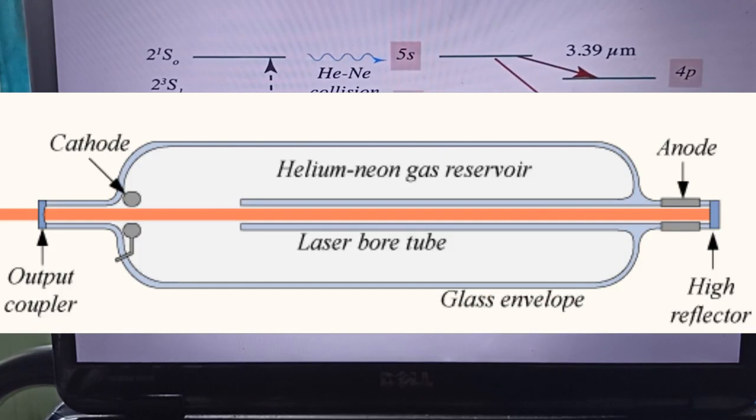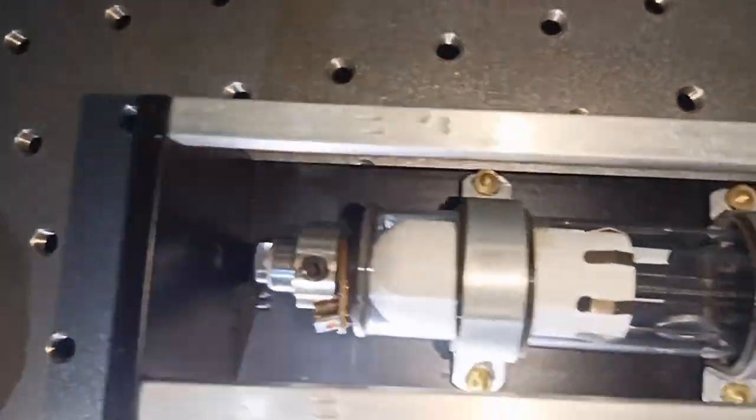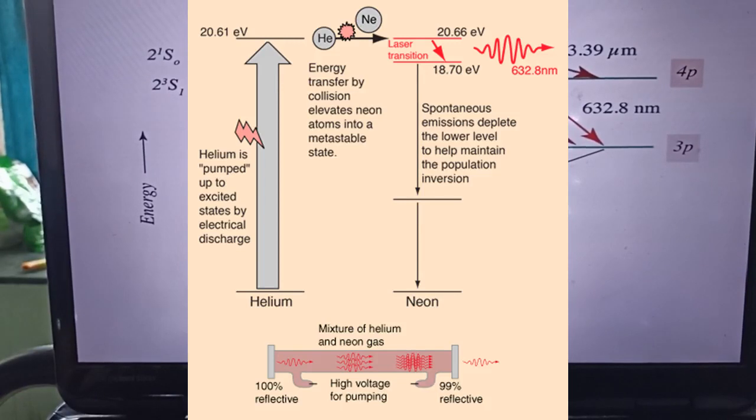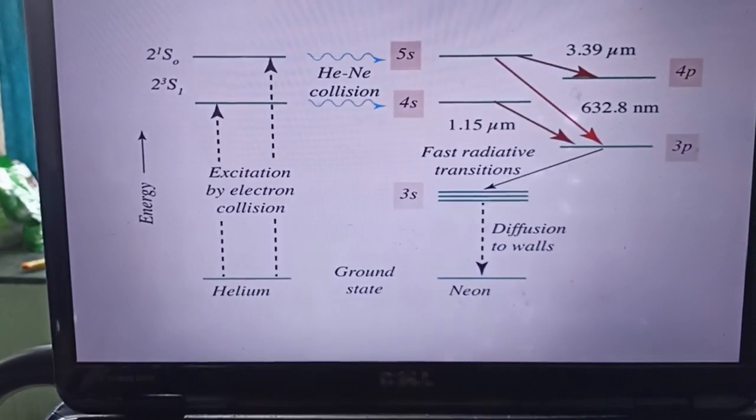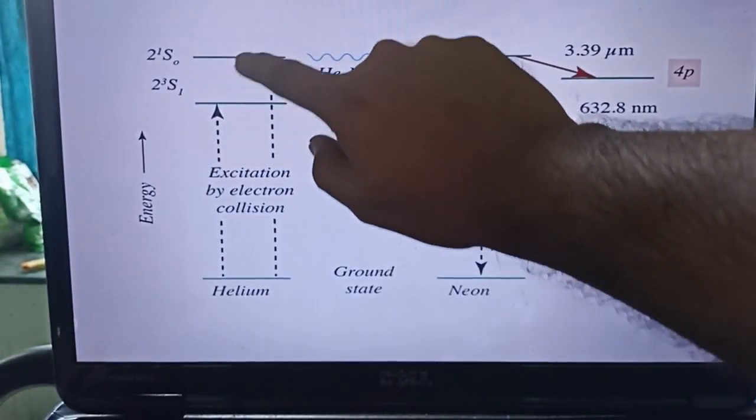Let us explain how it works. This cathode and anode produces electrical discharge. We give high voltage DC in the tube, kilovolt range. When there is high voltage discharge, electrons are generated which collide with the Helium atoms.